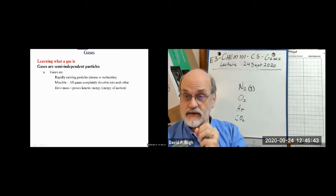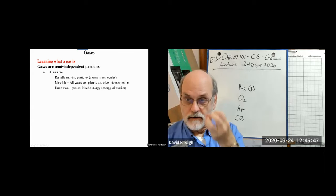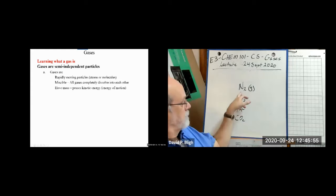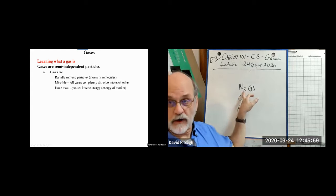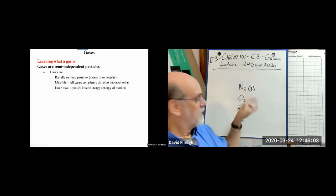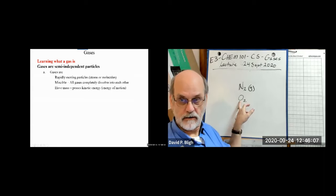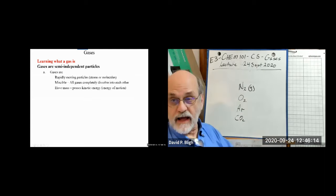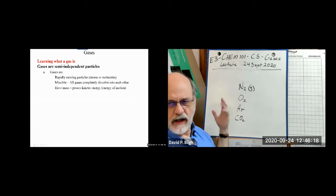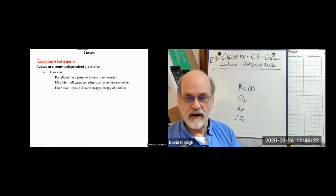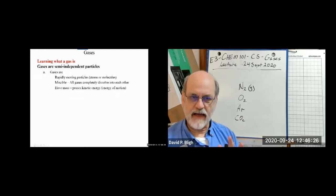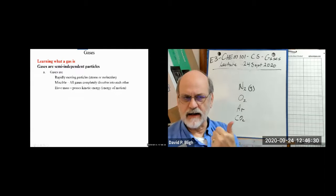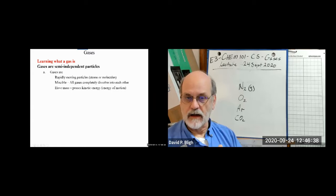Air itself is a solution — a homogeneous mixture. Two or more gases together are perfectly mixed. This makes logical sense: since the distance between particles is huge, there's plenty of room for all molecules. Individual gas atoms or molecules are real physical particles with mass. A mole of nitrogen (N₂) weighs 28.02 grams, a mole of oxygen weighs 32 grams, and a mole of argon weighs 38.95 grams.